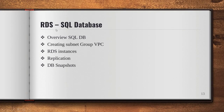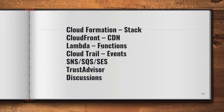RDS is Amazon's database service. Topics include: database service overview, SQL DB, creating a subnet and VPC, creating an RDS instance, replication, database snapshots, database backups, and restore.